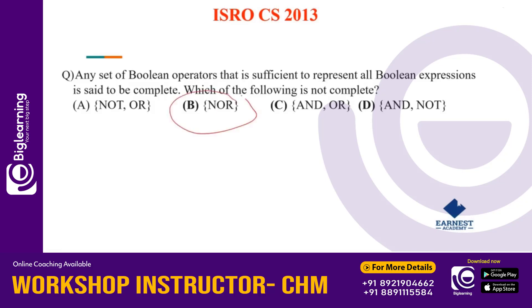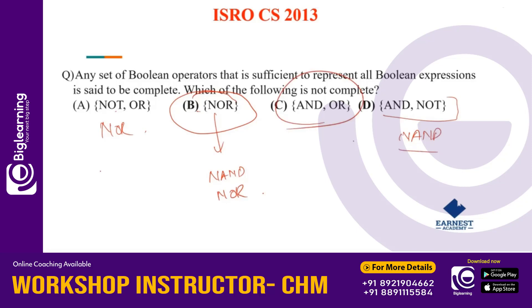NOR is a universal gate. We have to try to realize expressions using it. NOR and NAND are universal gates — the answer is not complete over one.